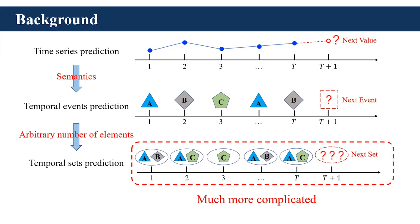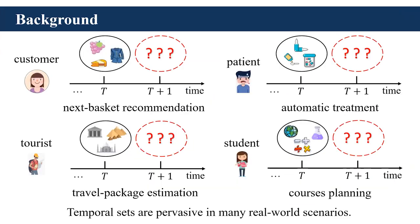In this paper, we need to solve the problem of temporal set prediction. Temporal sets are valuable in practical scenarios. For example, we can treat customers' purchase behaviors as temporal sets, where each set corresponds to a purchase at a supermarket and includes a number of products. Similarly, taking prescriptions in hospitals, traveling to multiple places, and choosing courses at schools could also be treated as temporal sets. Temporal set prediction is of great importance, and making accurate predictions can help people make better decisions.